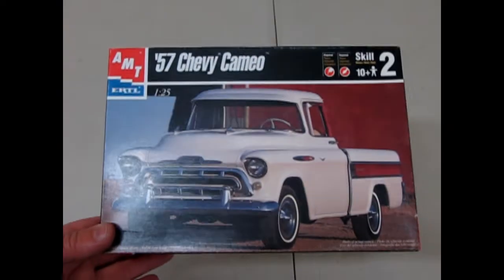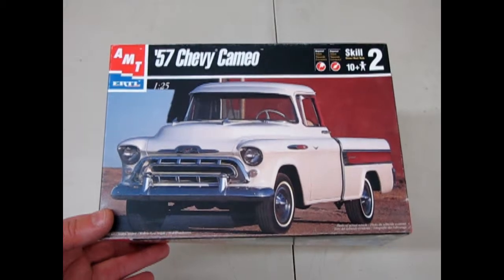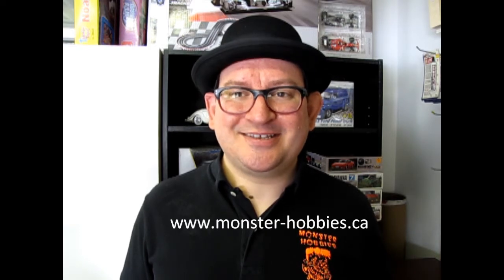And that brings us to the end of our review of the AMT Ertl 1957 Chevy Cameo Kit. Well I hope you enjoyed that episode of Monster Hobbies. What's in the Box? Where we got to look at this 57 Chevy Cameo pickup truck. A real innovation at the time. And if you would like to see what other cool model cars I have available, please check out our website www.monster-hobbies.ca. And don't forget to subscribe to this YouTube channel right down here so you can see more amazing unboxings. And check out these three videos to see what else we got. And until next time. Keep it real.